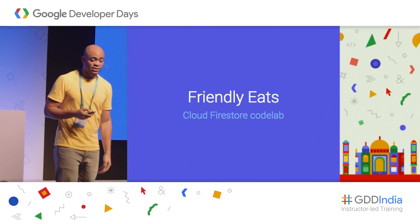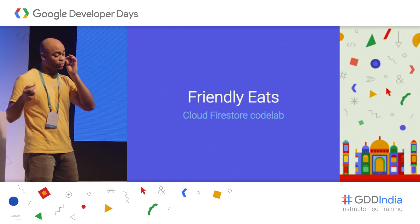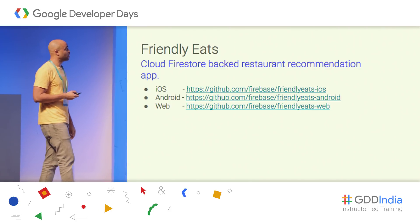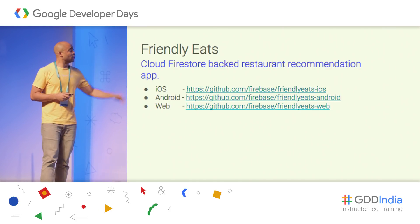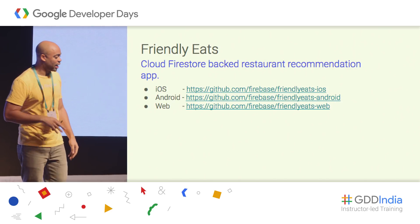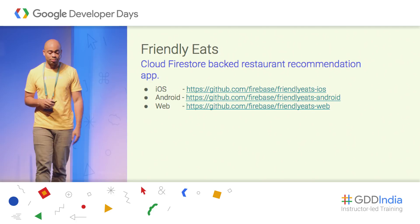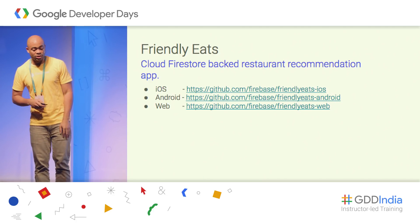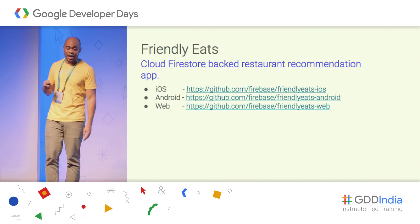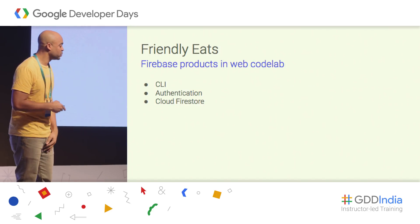That brings us to our codelab, FriendlyEats. Let's go through how Firestore is implemented in FriendlyEats. FriendlyEats is available on three platforms — Android, iOS, and Web — like most Firebase features and samples. You can go to our GitHub page and find FriendlyEats iOS, FriendlyEats Android, or FriendlyEats Web. We're going to focus on FriendlyEats Web today.